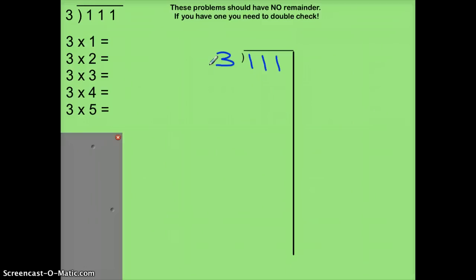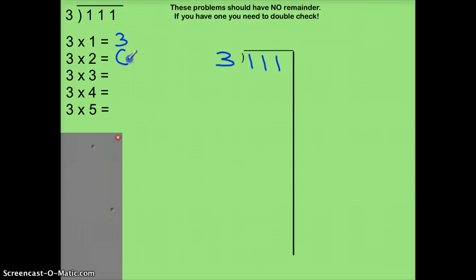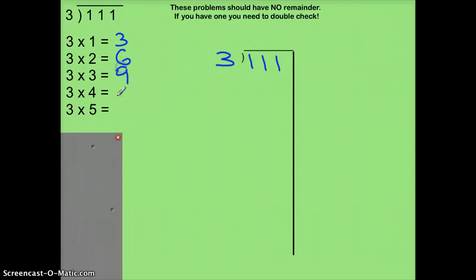I'm going to start out with some three facts. First one is 3 times 1 — just tell me the product. 3. 6. Next? 9. Next? 12. Next? 15.